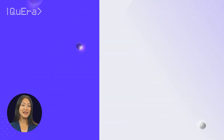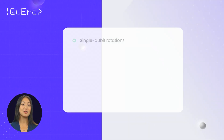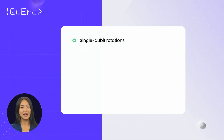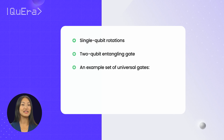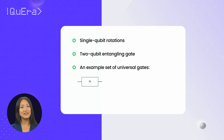Universal gate sets include single-qubit rotations and a two-qubit entangling gate. For instance, one popular set of universal gates includes the Hadamard gate, the phase gate, and the controlled NOT gate.